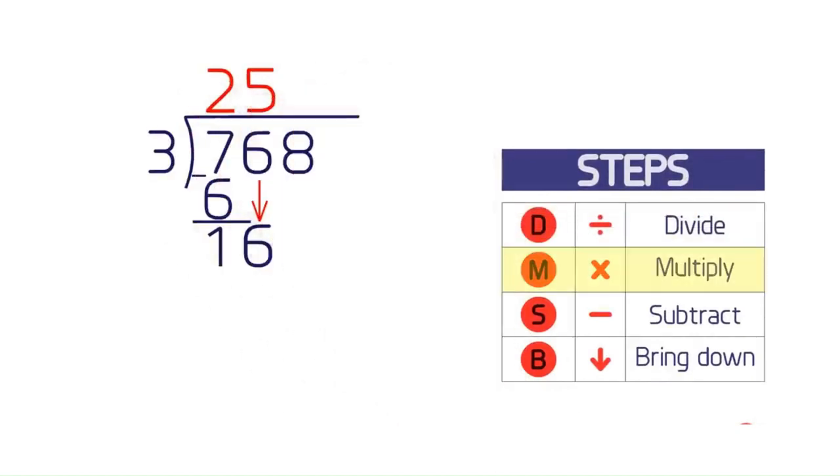Then multiply 3 by 5 to get 15. Write the product under 16. Subtract 15 from 16 to get 1. After you subtract, the result should be less than the divisor. 1 is less than 3, so it's okay.